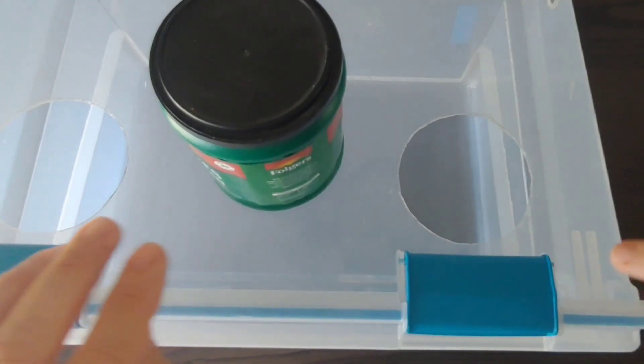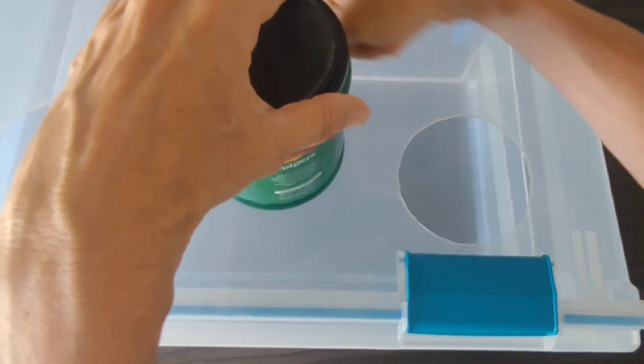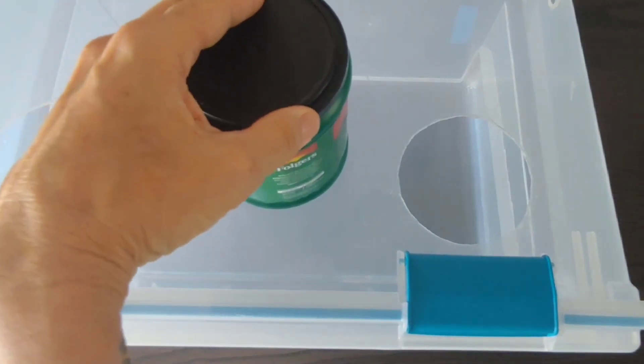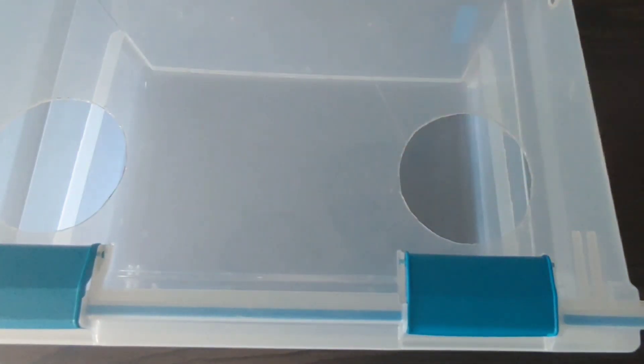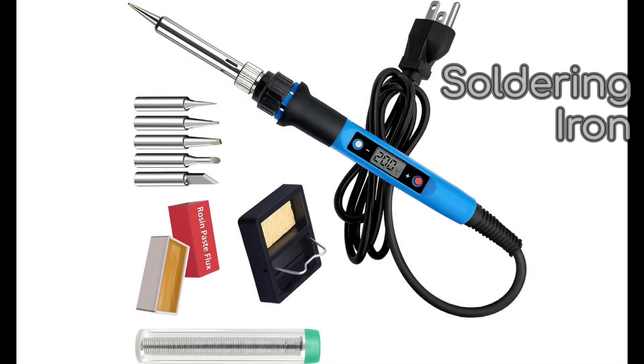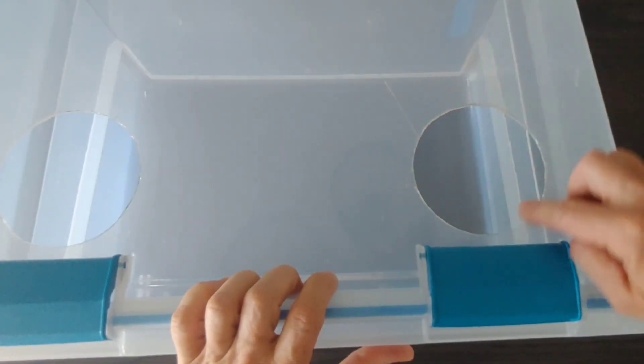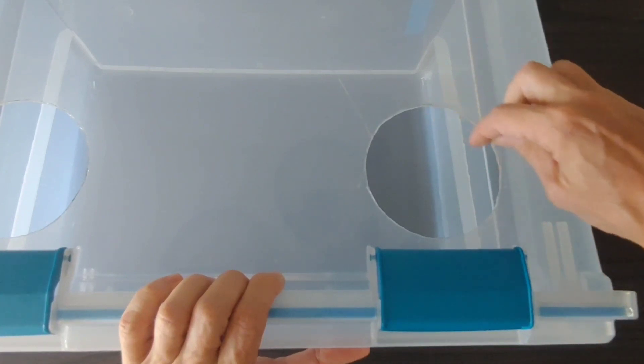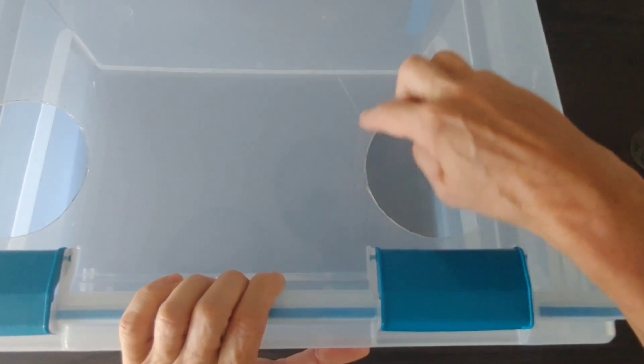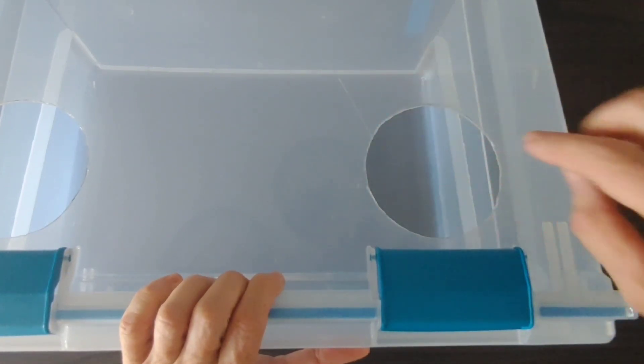Another important thing with the size is you need to be able to fit your jars through here. So what I did was I just traced it with a Sharpie and then cut it out. The best way I have found to cut it out is with the soldering iron.